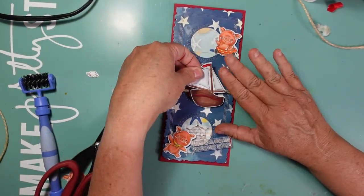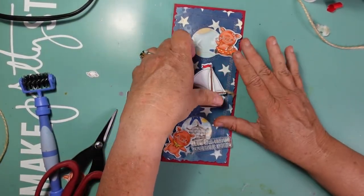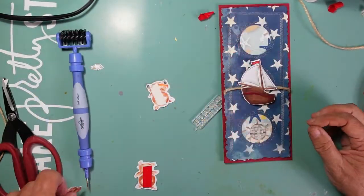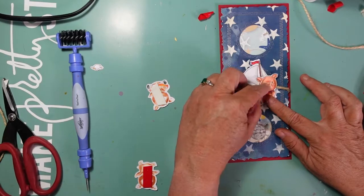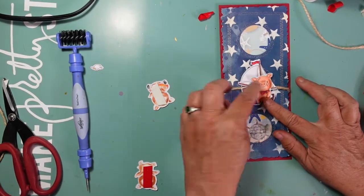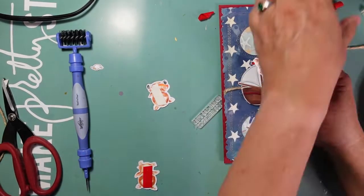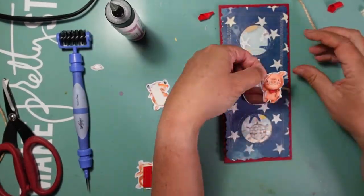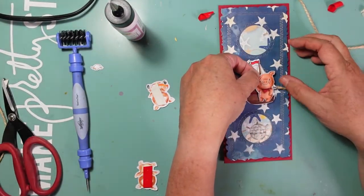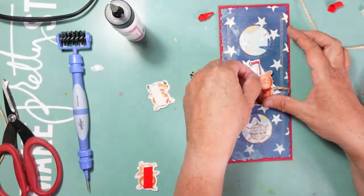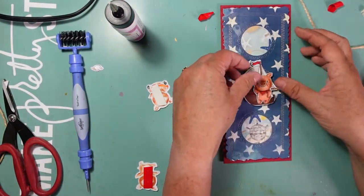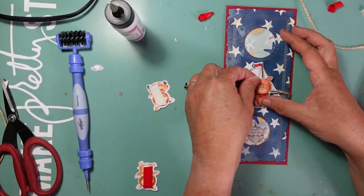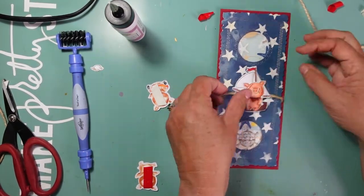I've added foam tape to the back of my sailboat, both at the top and the bottom. I made sure that the center of it didn't have any foam tape so that it could go around that twine nicely. And then I'm going to glue this one pig with some wet glue to the top of that sailboat, and I've added foam tape to the other two pigs, making sure that they are going to have the same dimension as the sailboat's going to have.